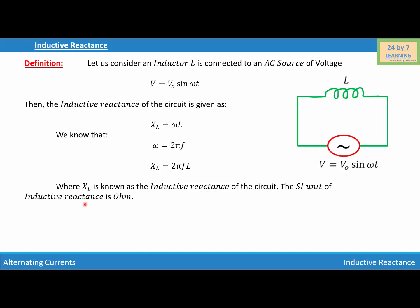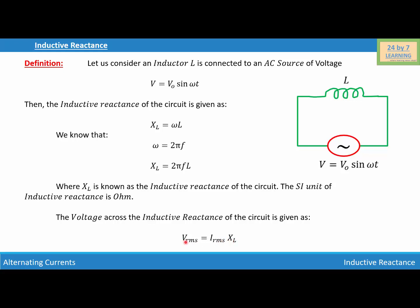The SI unit of inductive reactance is ohm. The voltage across the inductive reactance is given as V_RMS equal to I_RMS times XL, where V_RMS is the root mean square value of the voltage, I_RMS is the root mean square value of the electric current, and XL is the inductive reactance.